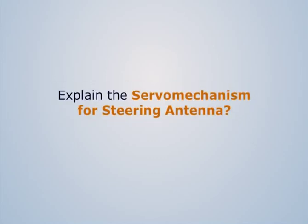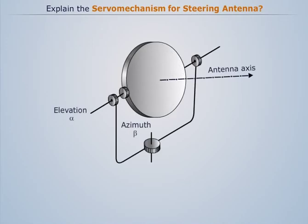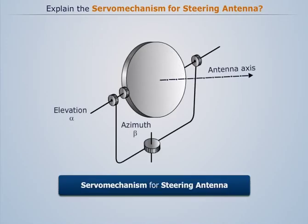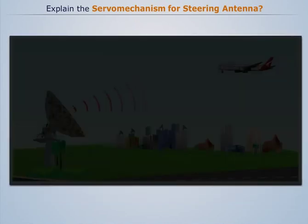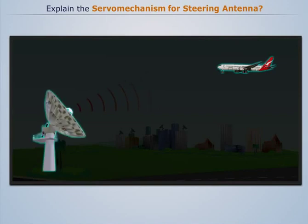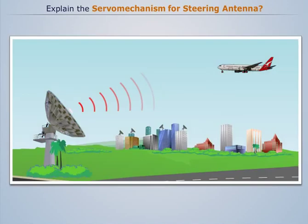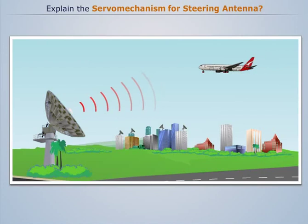To understand feedback control theory, let's take an example of a servo mechanism for steering an antenna. Earlier, radar tracking had limited range, such as for anti-aircraft fire control and missiles. These days, a radar scene consists of a target, radar, and waveforms that propagate to the target and back. The antenna points at the target and follows its motion.